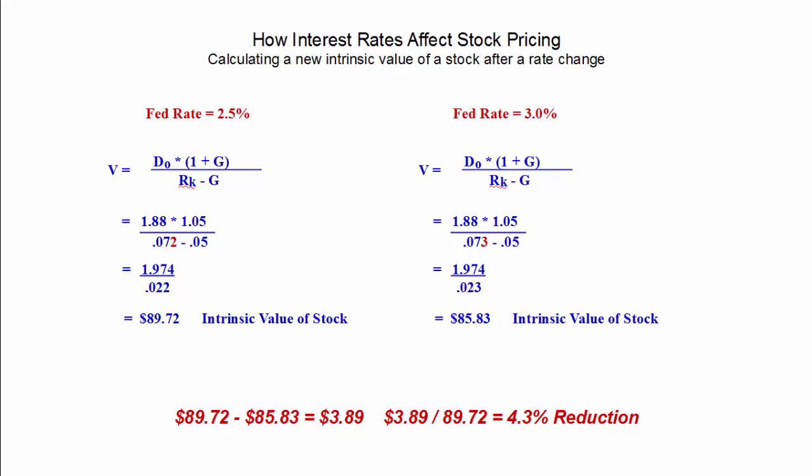So let's put the two side by side and look at it. The only thing we have changed in both equations is the risk-free rate that we're using. We see that the stock price dropped $3.89 from a 0.5% rise in the federal interest rates. That's a 4.3% reduction in the intrinsic value of the stock.